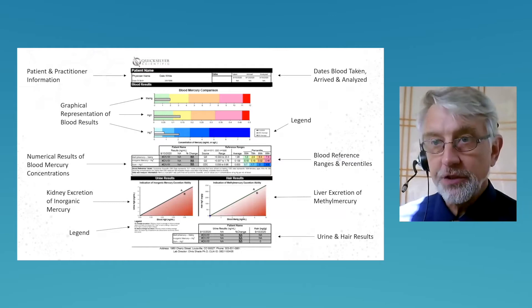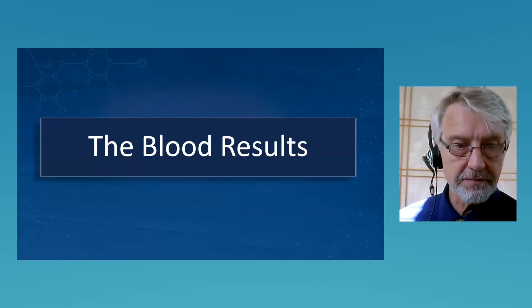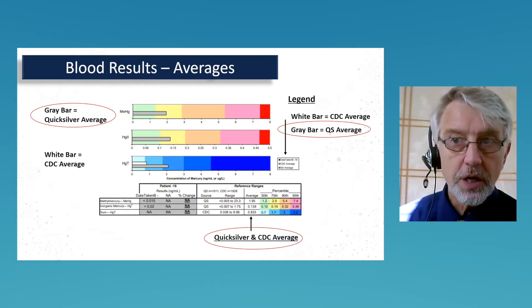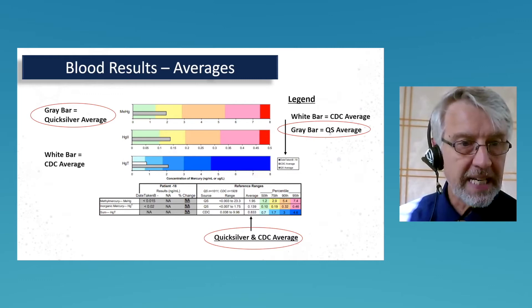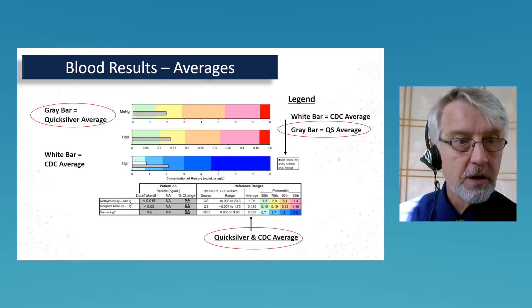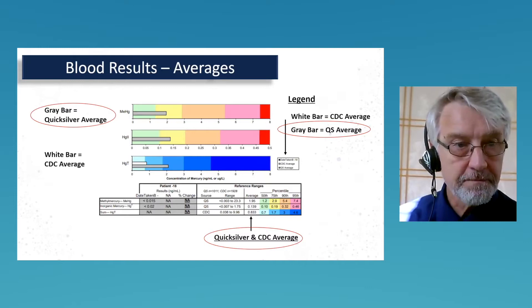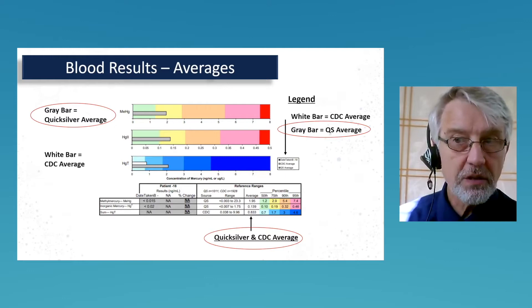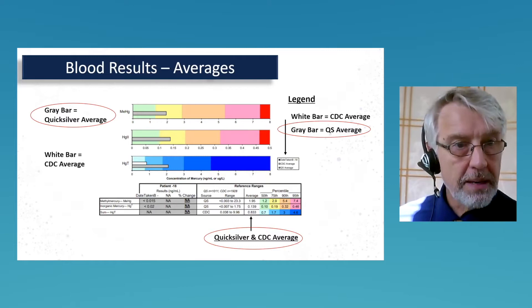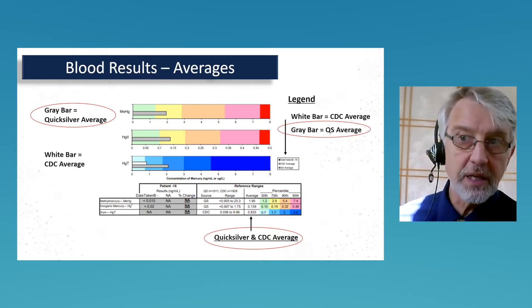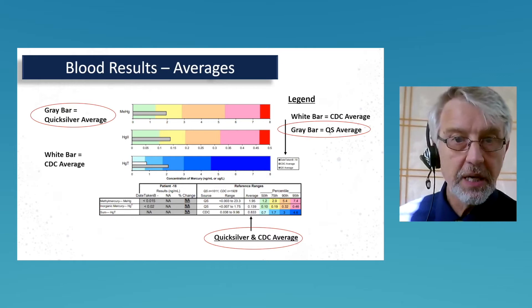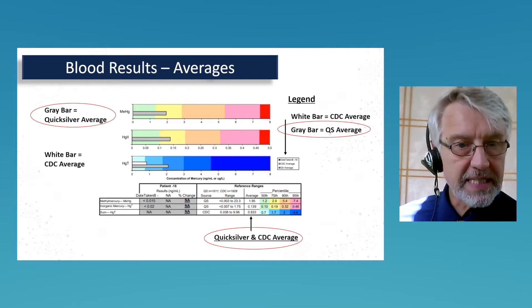First we're going to look at only the blood results. The top half of page one is the blood results only. You'll have three color bar graphs and a table. The numerical results are presented in the table, and the three colored bar graphs above are a graphic representation of those numerical results, broken into percentiles for quick and easy reading. The gray bar represents the Quicksilver average. On the right-hand side there's a legend — if you forget which color bar means what, you can reference it.